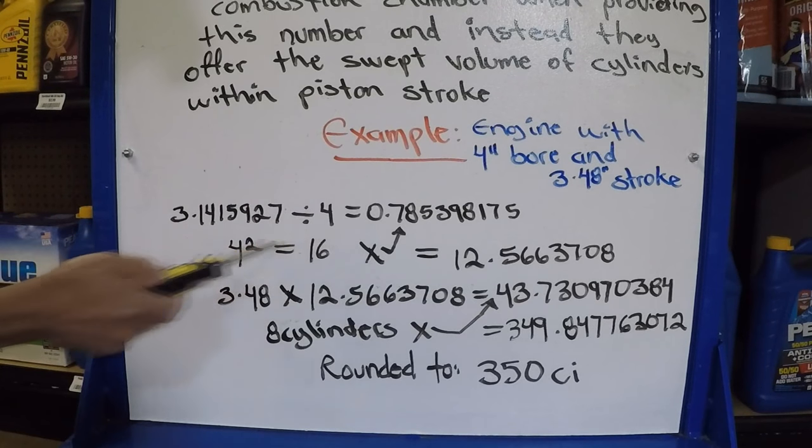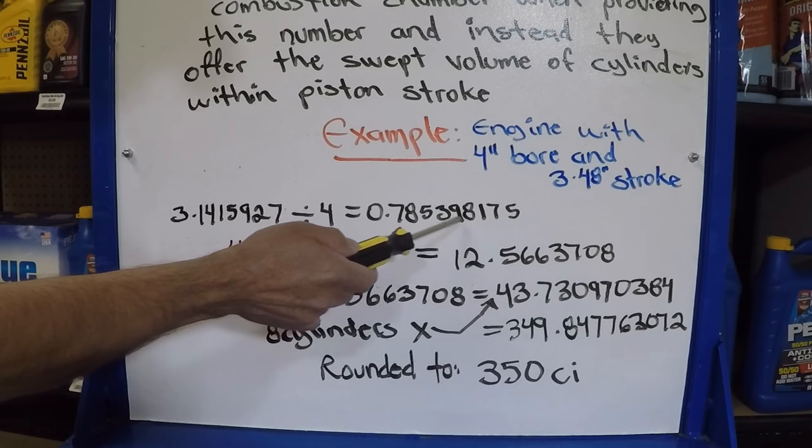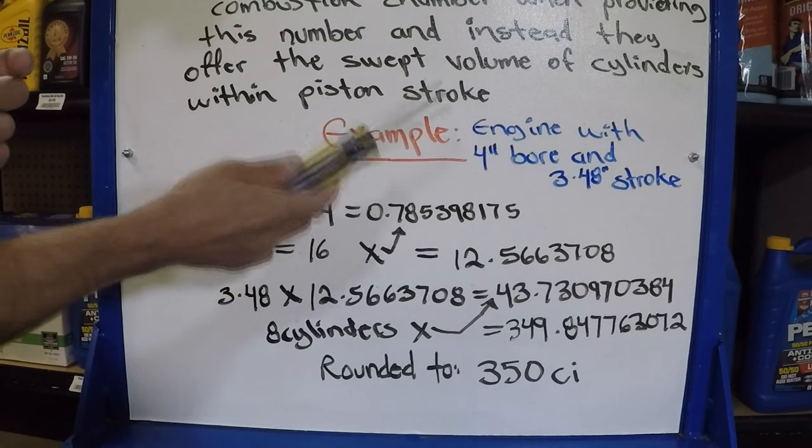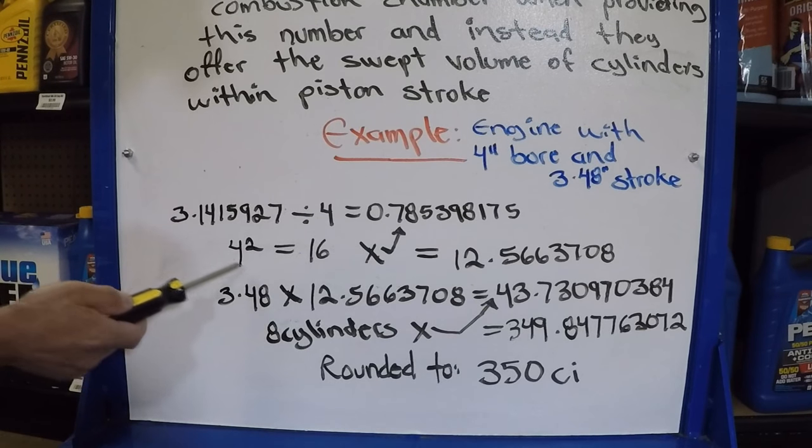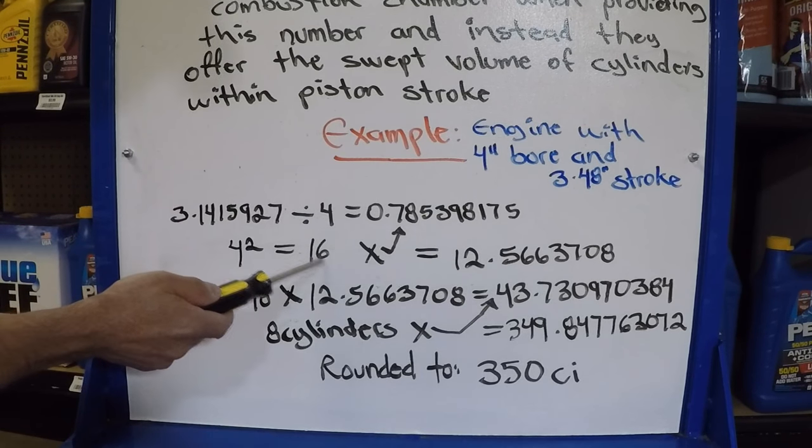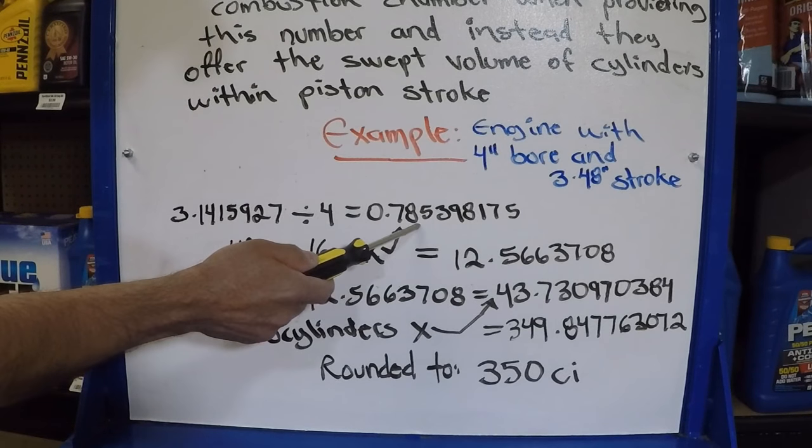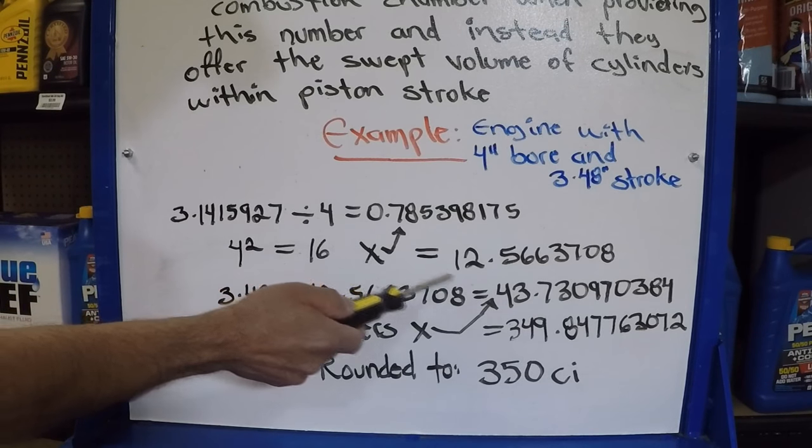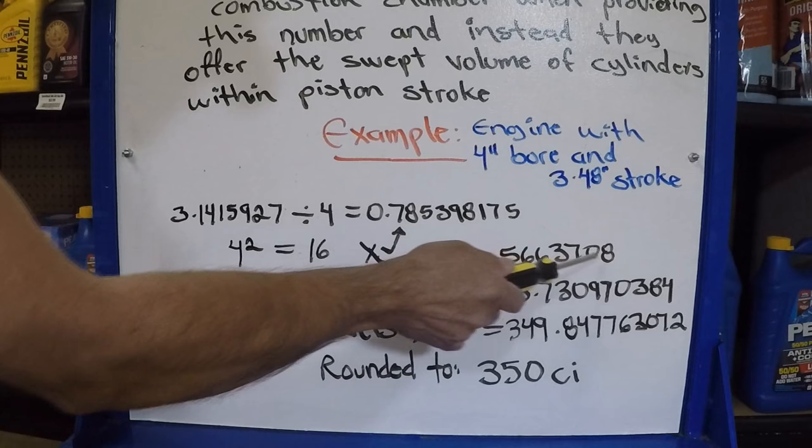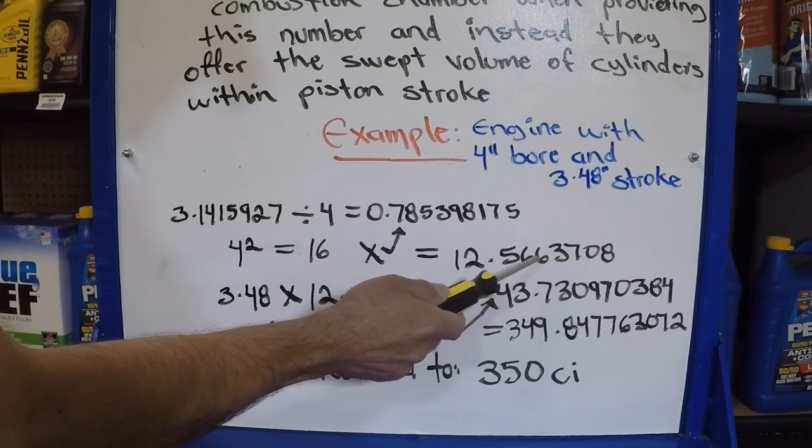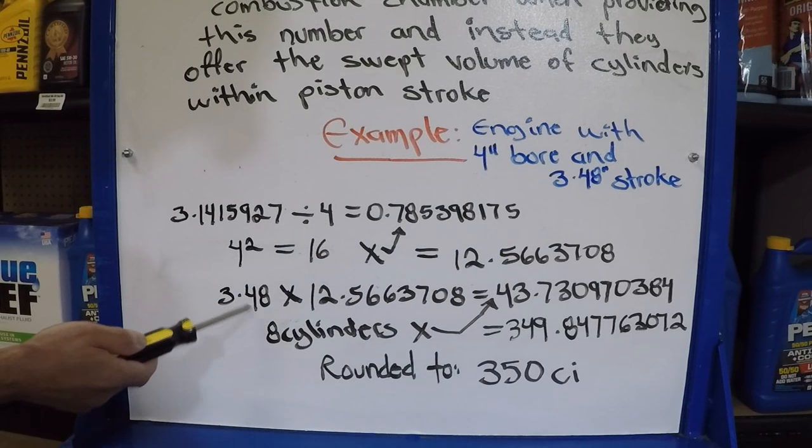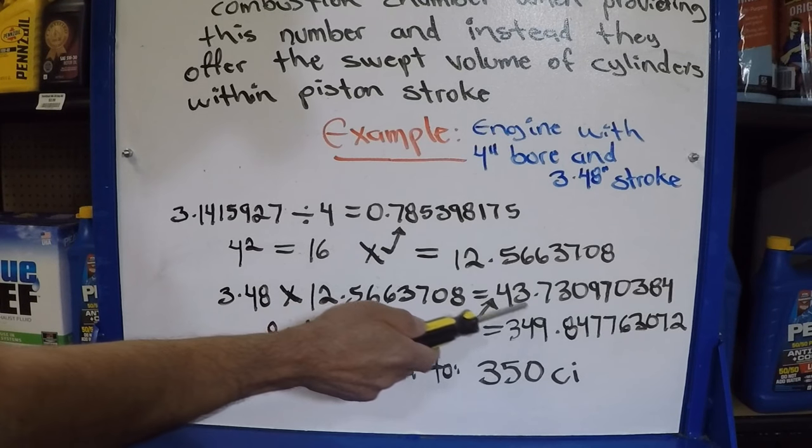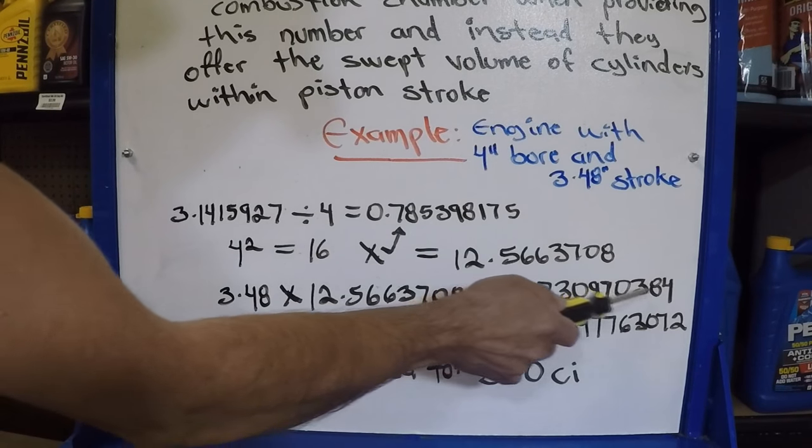So the pi divided by 4 ends up being 0.785398175, long number. So the square root of 4, which is our bore, then ends up being 16. 4 times 4, 16. If we multiply 16 by this number, which is the division of that by 4, we end up with 12.5663708. Now, after that, we have to multiply it by the stroke. So 3.48 times 12.5663708 equals 43.730970384, long numbers.